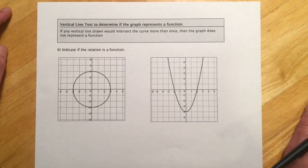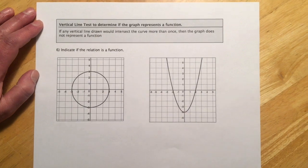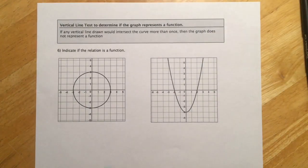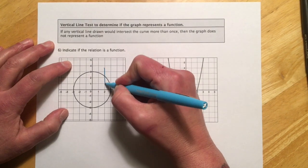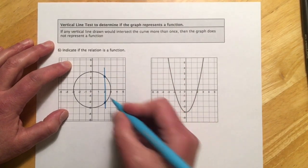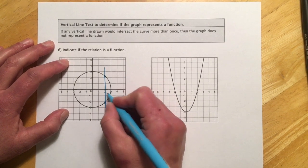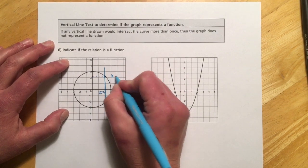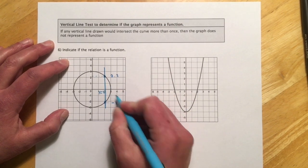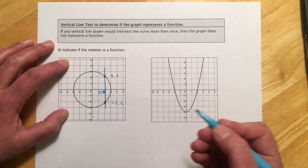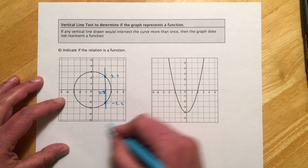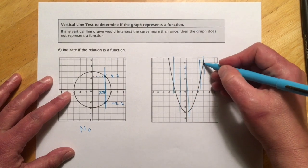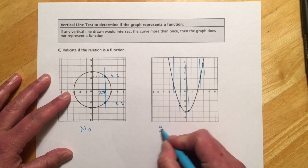This next one is the vertical line test to determine if a graph represents a function, and this is super easy. If any vertical line drawn would intersect the curve more than once, then the graph does not represent a function. If I draw a vertical line through here and hit the graph in more than one place, it's not a function — because for this x, say x is 2, the output could be about 2.2 or about negative 2.2. So for a given x, I'm getting two different y values. Over here, no matter where I draw a vertical line, I'm only intersecting the graph at one place, so yes, that would be a function.